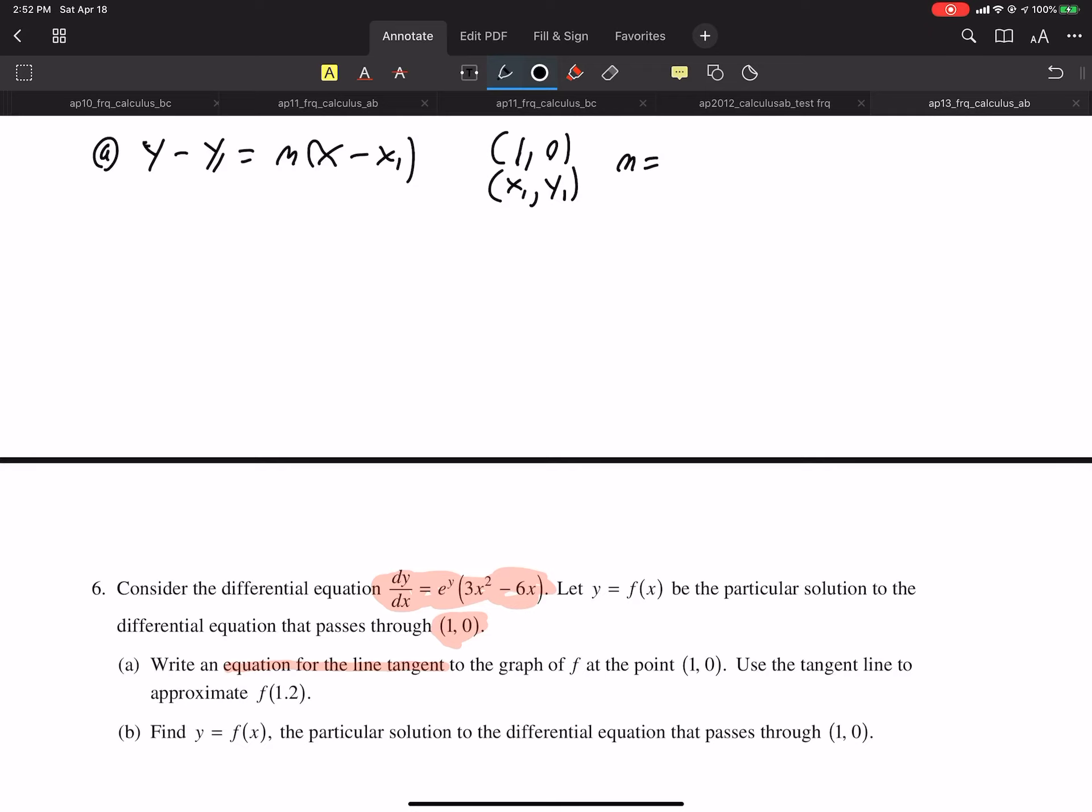So we want the derivative at that point of tangency. So we plug that into the function they give us there. So it's going to be e⁰ times (3 times 1² minus 6 times 1). So it's 1 times (3 minus 6), so that should be negative 3. There's the slope of the tangent line.